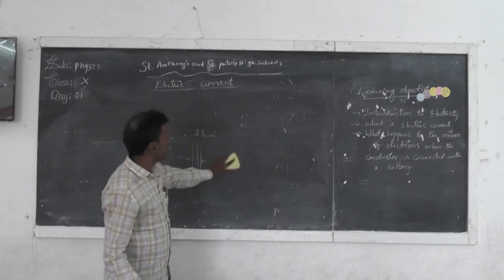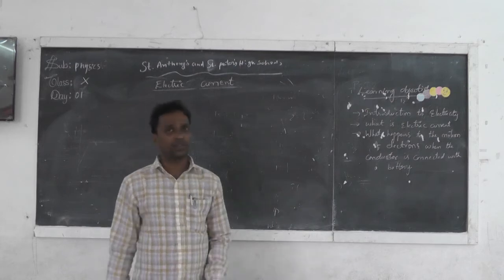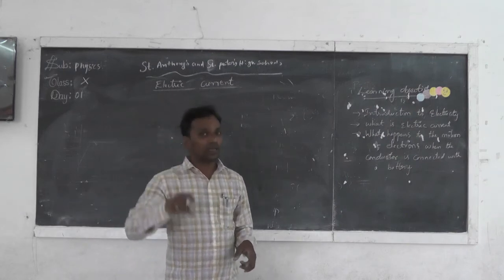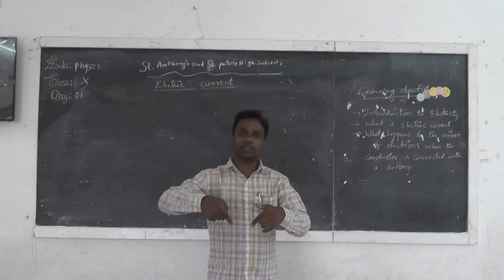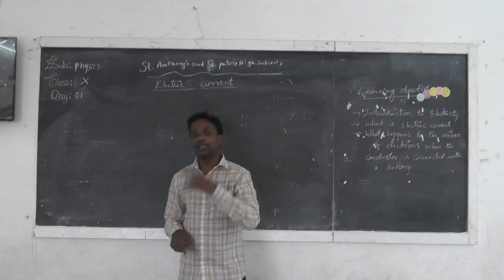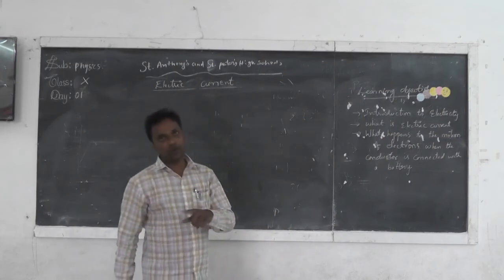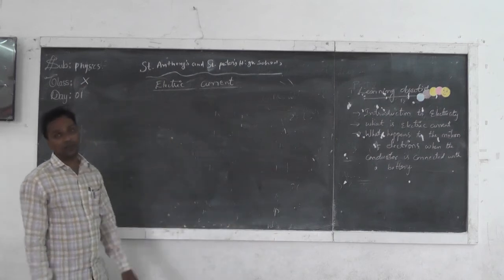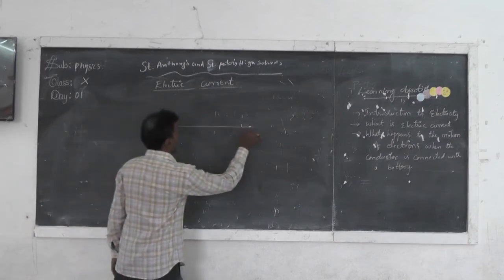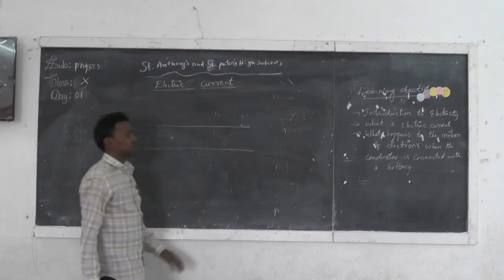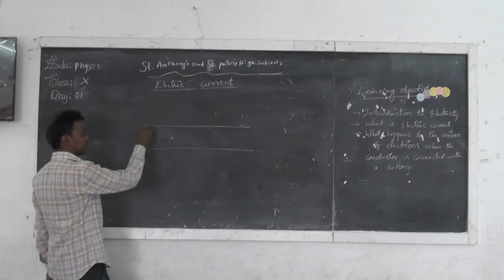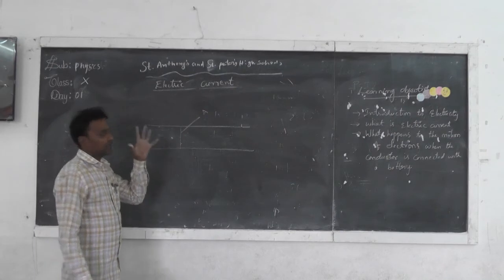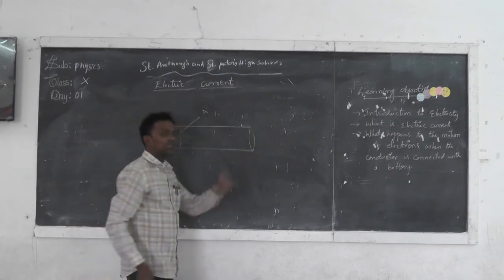Now, what energy is being transformed from the source to the bulb? Whatever energy is inside the battery — that chemical energy — when the two conductors are connected, that chemical energy is converted into electrical energy. That electrical energy will be flowing from one point to another point, that means from positive terminal to negative terminal. Let us see a conductor structure: this is a conductor with cross-sectional area A. A is the area of cross section — simply the thickness of the conductor.